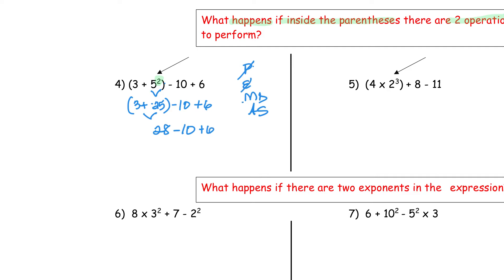No more exponents, no more multiplication or division. Now I have addition or subtraction. Looking at my problem: 28 minus 10 plus six — what comes first, the subtraction or the addition? If you said subtraction, you were totally right. So 28 minus 10 gives me 18, plus six. My final answer is 24.